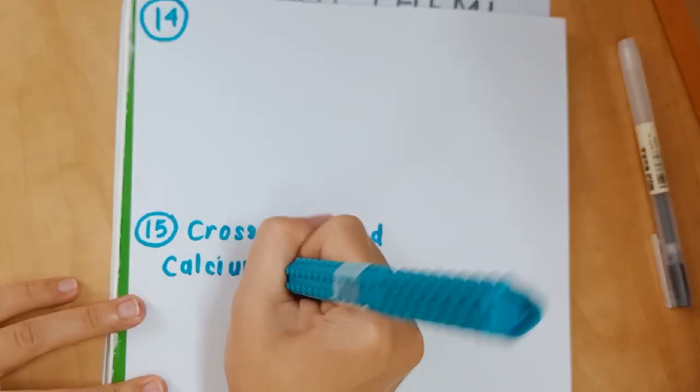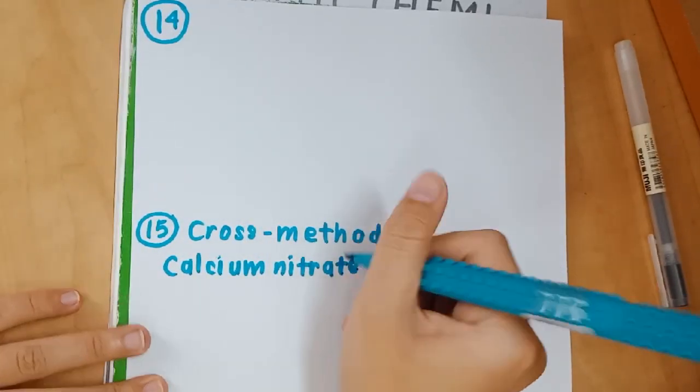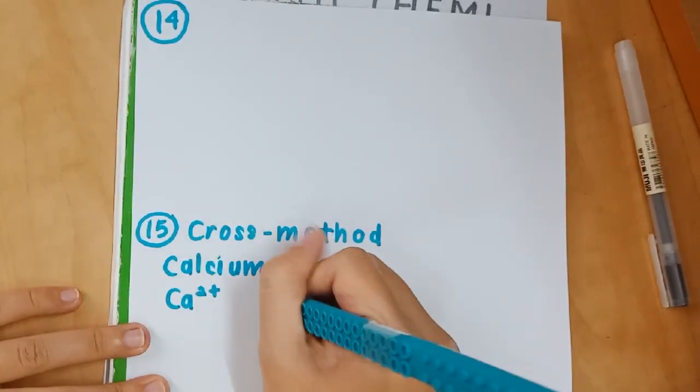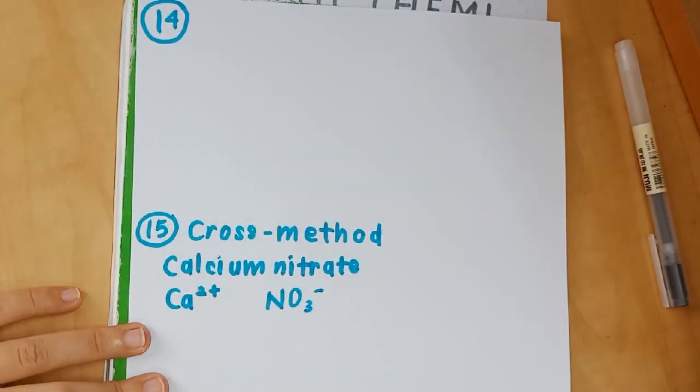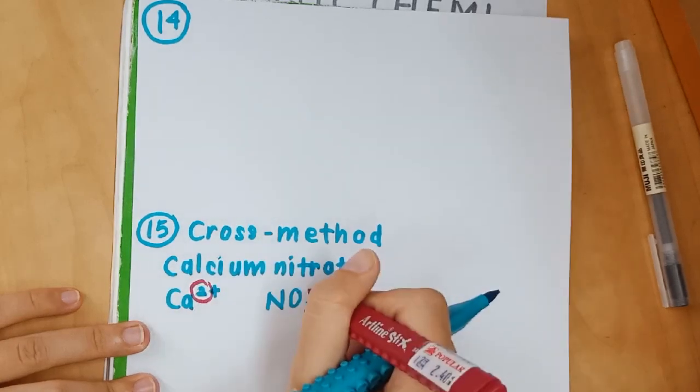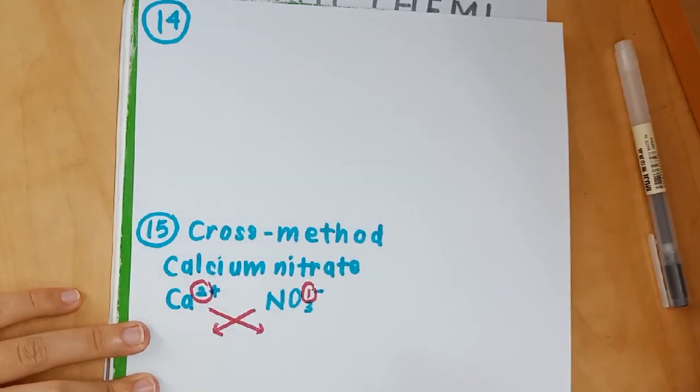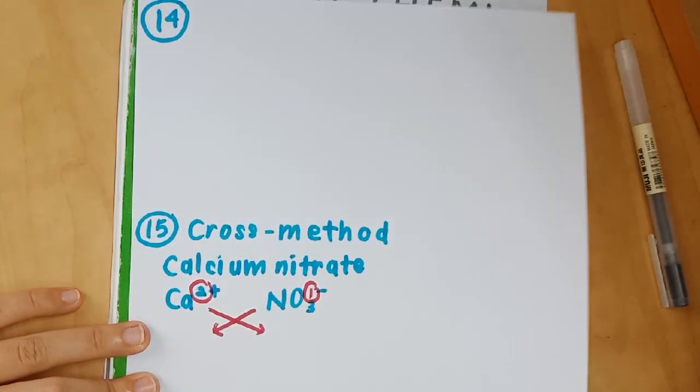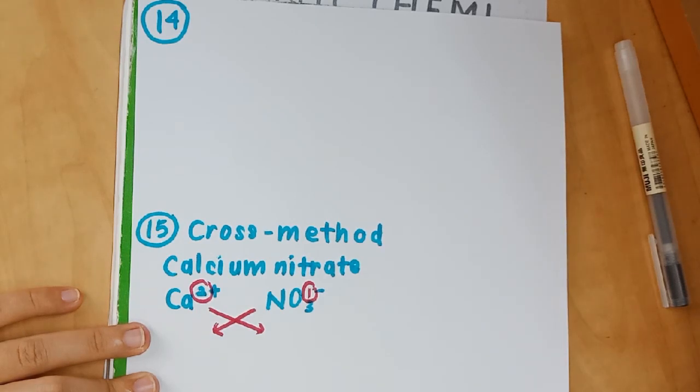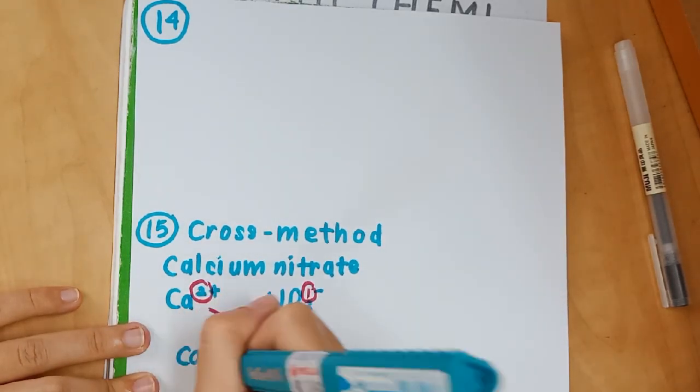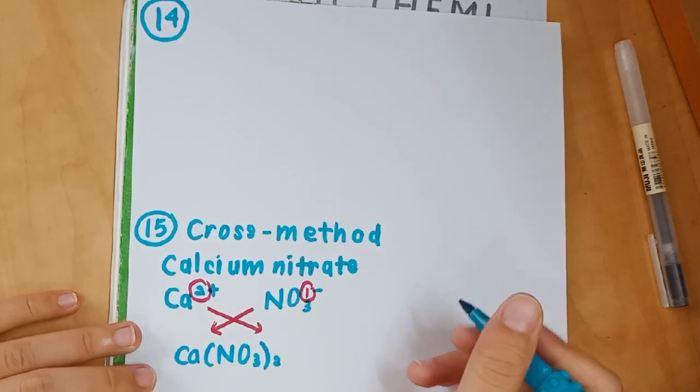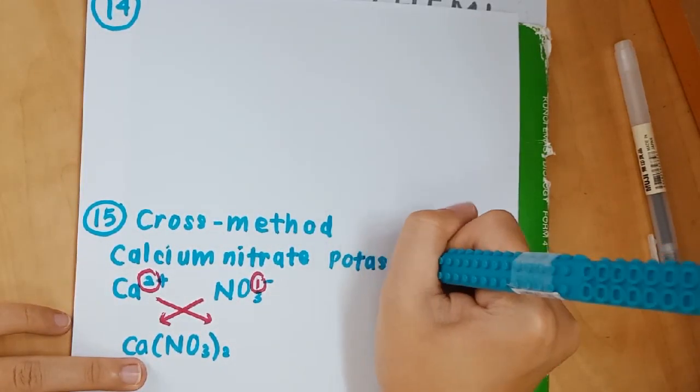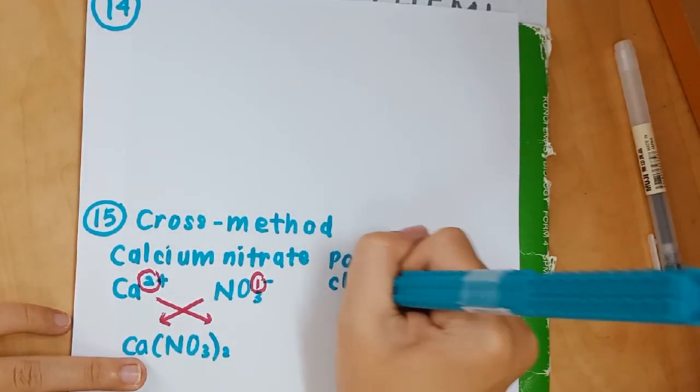How to apply this cross method: you have to write down the separate ions. For calcium, it's Ca²⁺, nitrate is NO₃⁻. You determine the charge on top: Ca²⁺ is 2, NO₃⁻ is 1, and you cross the charge. For Ca you'll be 1 from NO₃⁻, and for NO₃⁻ it'll end up with 2, so it's Ca(NO₃)₂.